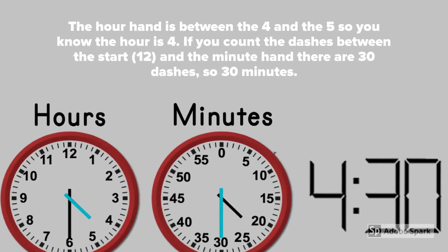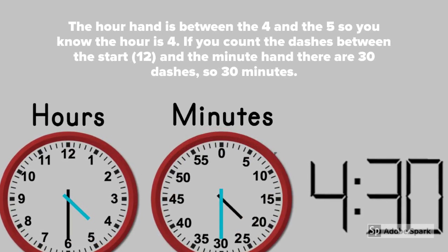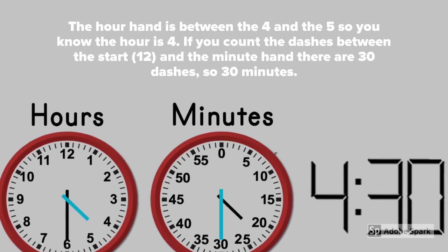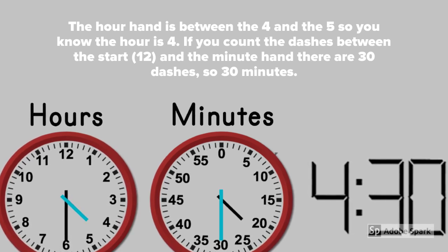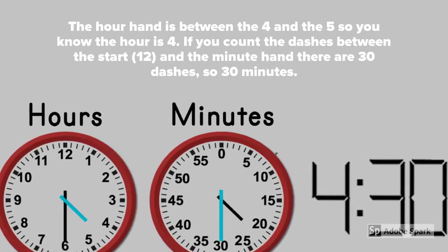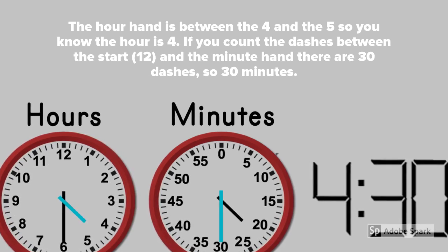The hour hand is between the four and the five, so you know the hour is four. If you count the dashes between the start twelve and the minute hand, there are thirty dashes, so thirty minutes. The time is four thirty.